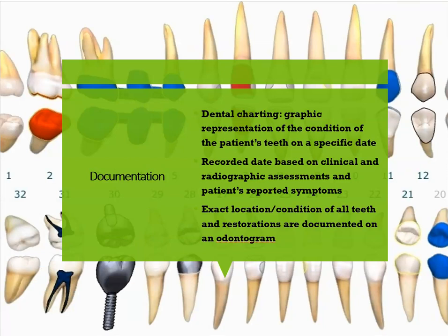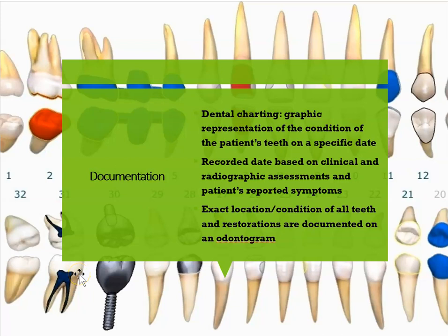When we do a hard tissue charting or dental charting, we are documenting everything. It could be on paper or electronically. This is a graphic representation of the patient's teeth on a specific date, and we update it regularly. We're noting down all the restorations, the exact location of the teeth, any drifting, tilting, or rotation — all that is recorded in the dental charting.